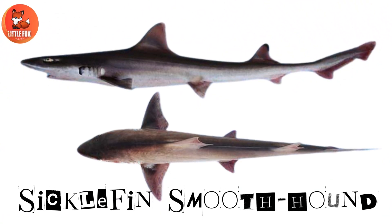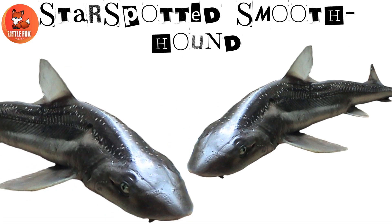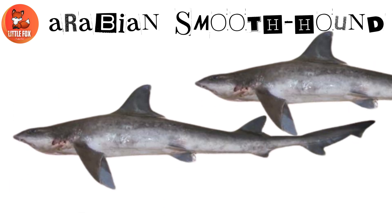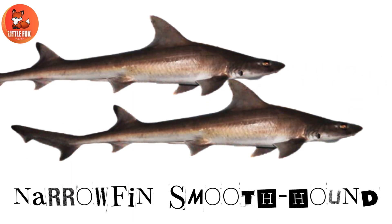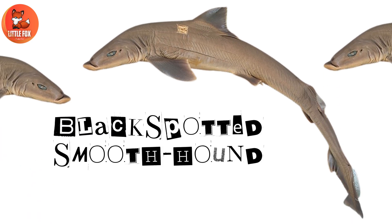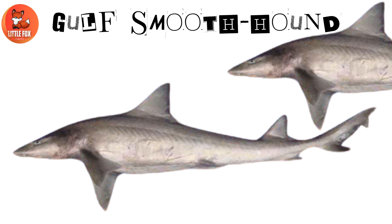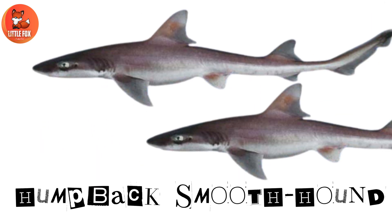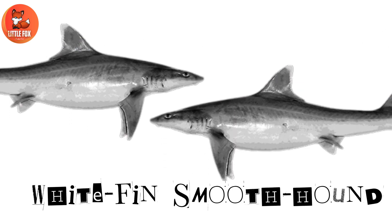Number ten: leopard shark. Number eleven: sickle fin smooth hound. Number twelve: star spotted smooth hound. Number thirteen: Arabian smooth hound. Number fourteen: narrow fin smooth hound. Number fifteen: black spot smooth hound. Number sixteen: gulf smooth hound. Number seventeen: humpback smooth hound. Number eighteen: white fin smooth hound.